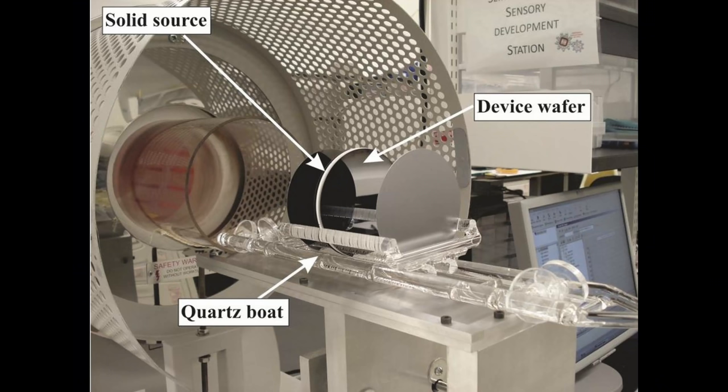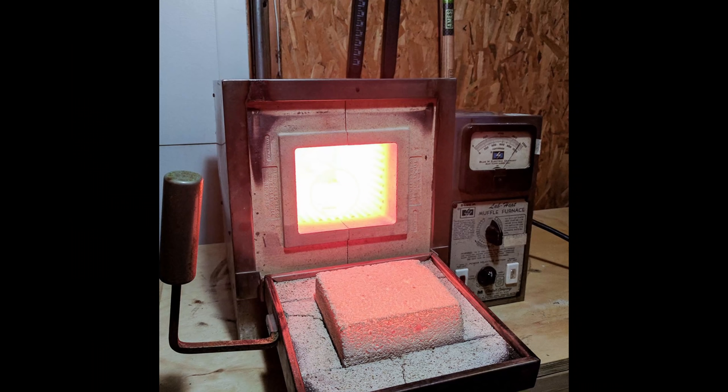The classic traditional way to do this is through thermal diffusion. The idea is that if you take phosphorus, put it on top of a wafer, and throw it in a furnace for an hour or two at a thousand degrees, over time the phosphorus will slowly diffuse into the silicon.